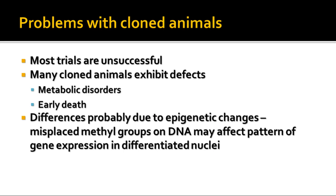There are problems with cloned animals. Most of the time it's unsuccessful — cloning doesn't work. When it does work, oftentimes the cloned animals exhibit defects of one kind or another, either some kind of metabolic disorder, early death, or early onset of age-related diseases. The differences are probably due to epigenetic changes — when you have methyl groups on the DNA that are misplaced, that can affect the pattern of gene expression and the way the embryo grows into a new organism. Most of the time when they clone animals like cats and dogs, they experience these kinds of issues.